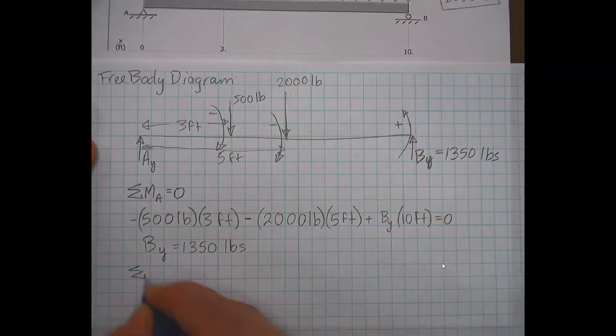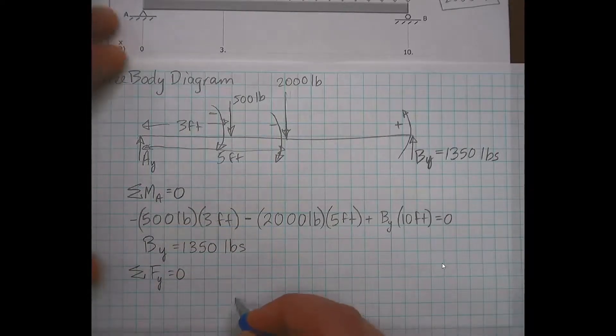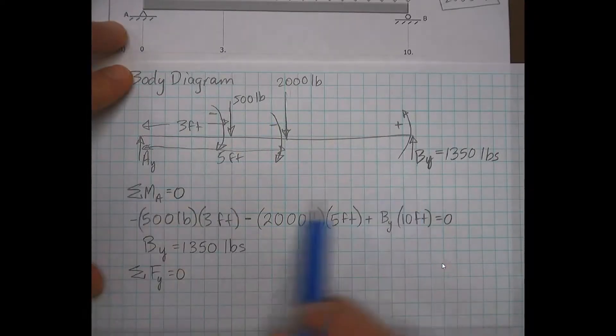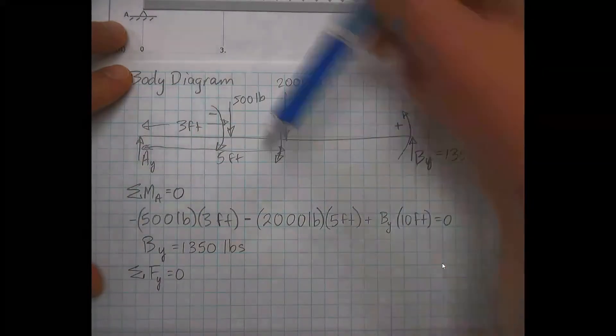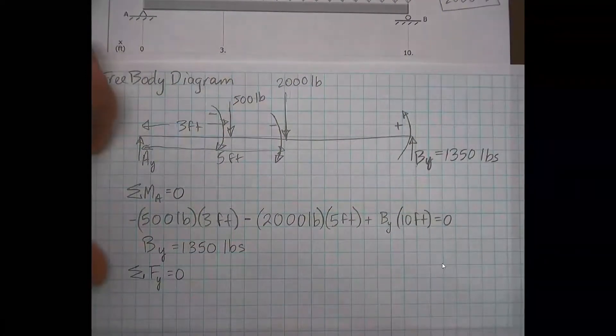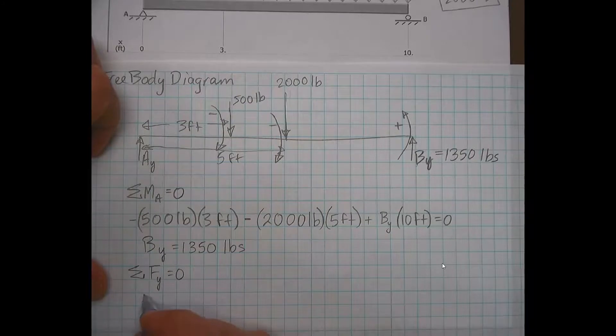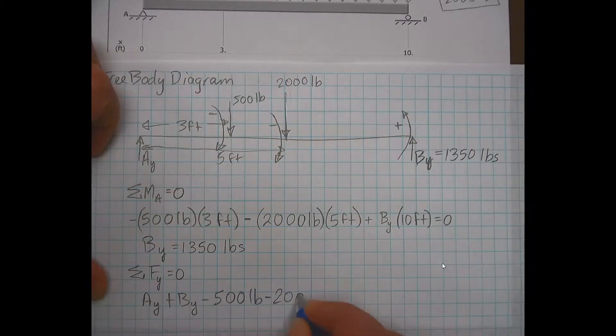The other static equilibrium equation we use is sum of the forces in Y equals zero. And so that would be our AY plus BY, our up forces, and then these applied forces, the 500 and 2000, would be our applied forces. These are our reaction forces. So the equation would be AY plus BY minus 500 pounds minus 2000 pounds equals zero.